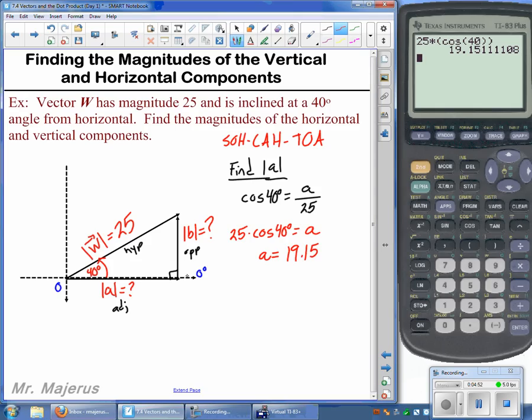So what we need, then, to produce this 40-degree vector with a magnitude of 25 would be a horizontal force of 19.15 units, newtons. There's a pretty typical measurement. It could be pounds, any kind of force or speed, maybe even any kind of scalar.